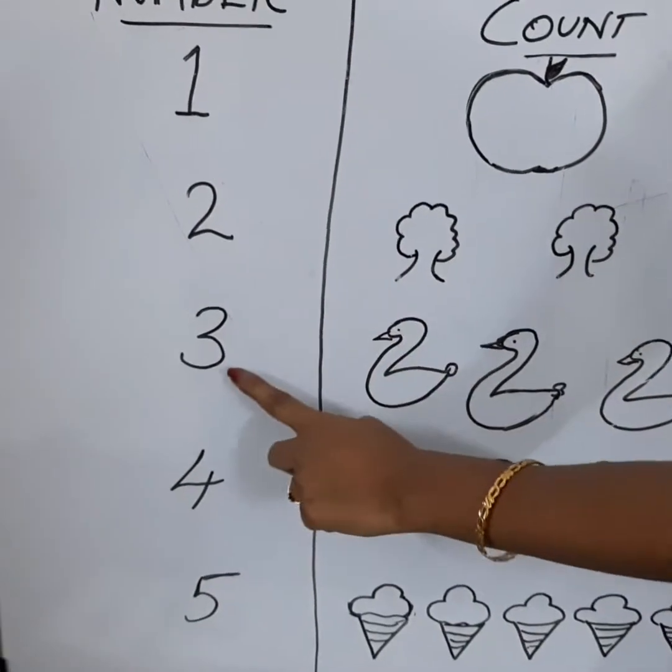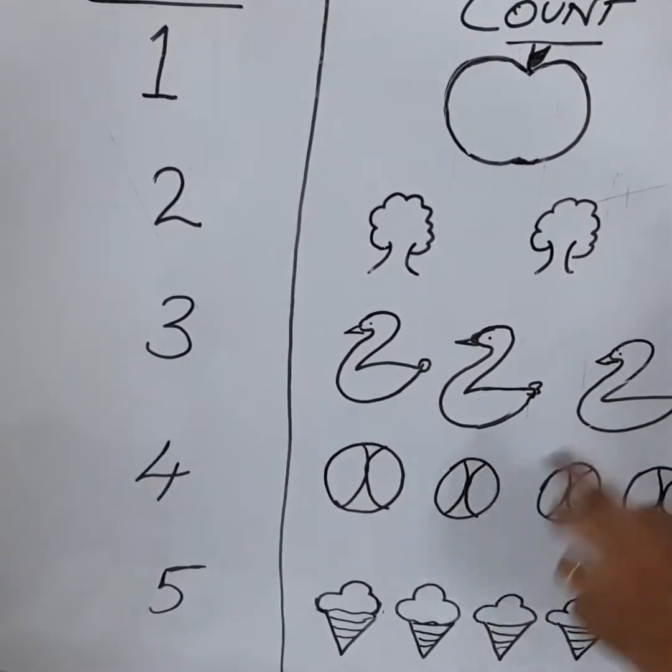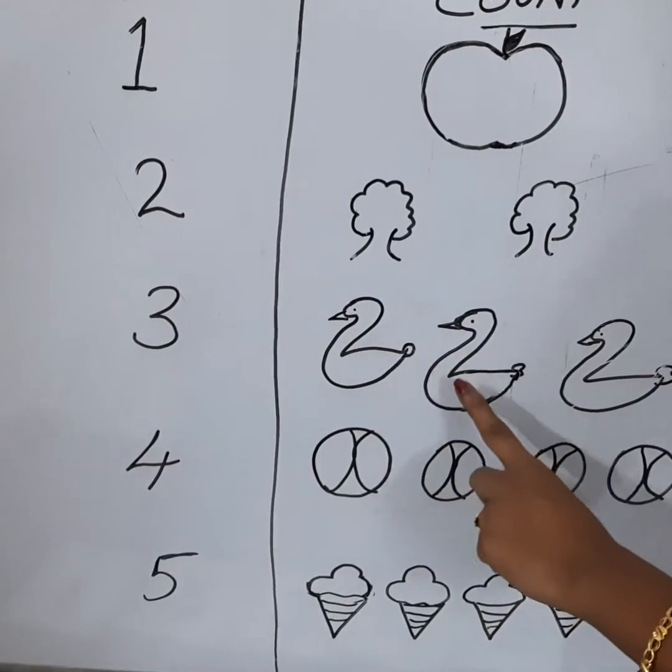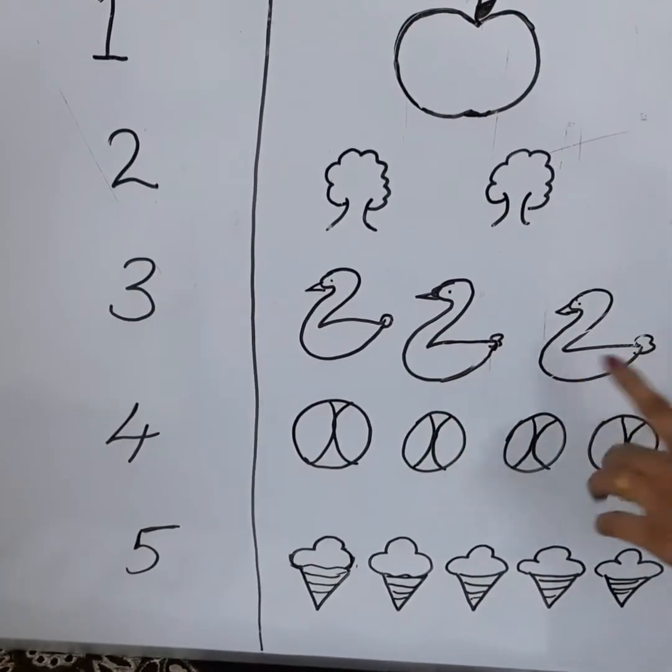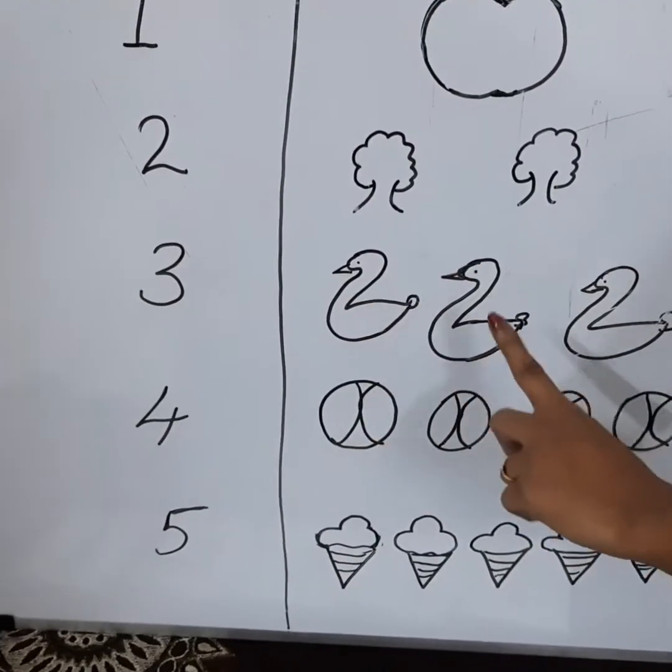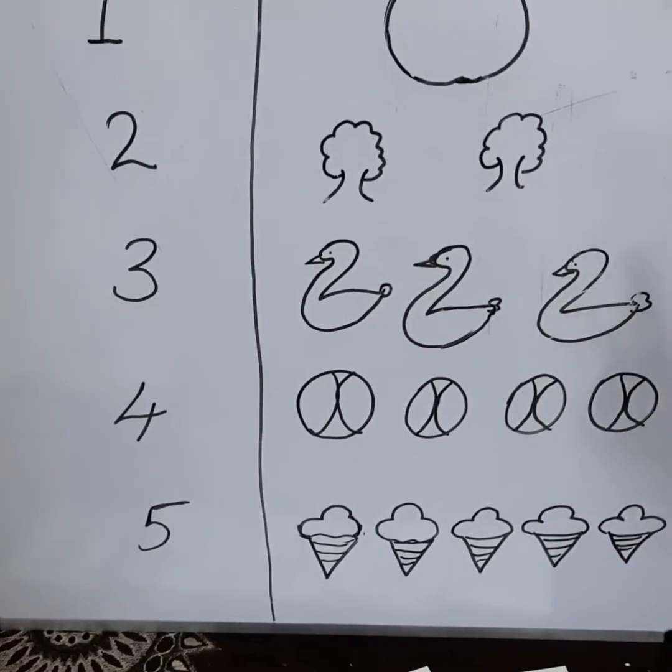Next to 2, it is 3. What is here? Ducks. 1, 2, 3. Total 3. Total 3 ducks are here. Okay? You have to count like this. 1, 2 and 3.